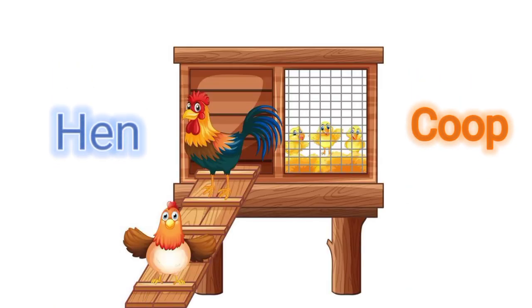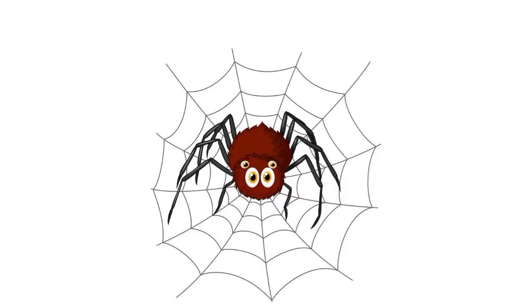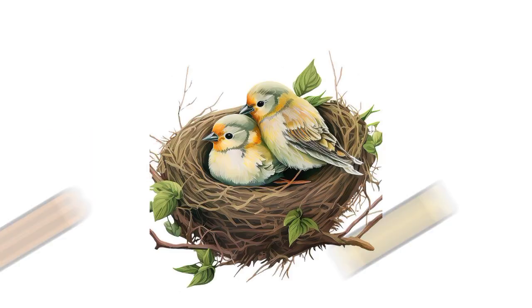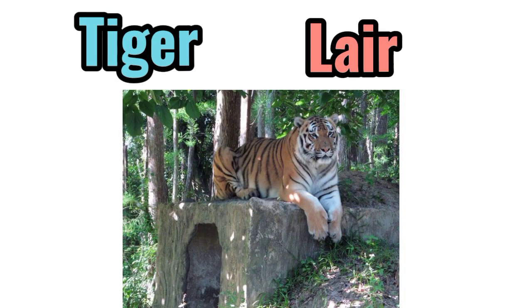Hen. Hen's home is called a coop. Spider. Spider lives in a web. Bird. Bird's home is called a nest. Tiger. Tiger lives in a lair.